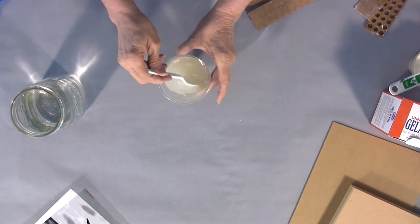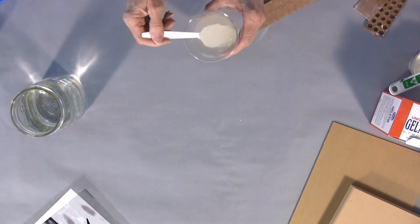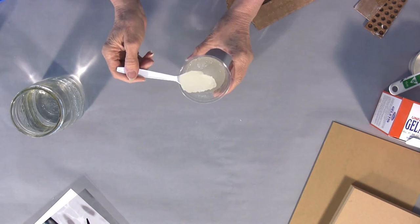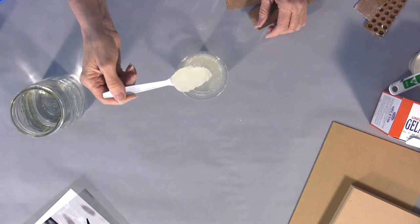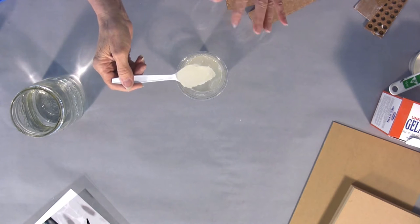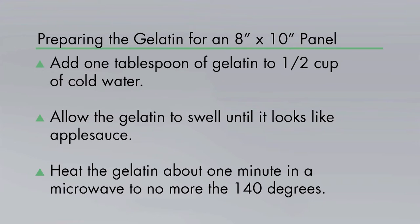Mix that up in the water and after about a half an hour this is going to swell up and become like applesauce. You can see how that really sits up. That is the state at which we can heat this. Now this is going to go into a microwave oven for one minute. Again the recipe is one tablespoon of gelatin to a half cup of water that has some sodium benzoate in it.